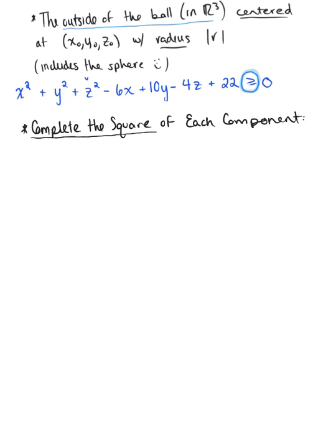To begin, I'm going to group up my like terms. We'll group the x terms, the y terms, and the z terms. So we have x squared minus 6x plus y squared plus 10y plus z squared minus 4z. And then notice we've got this constant 22 here, so I'm going to subtract 22 from both sides of the inequality and say that this is greater than or equal to minus 22.